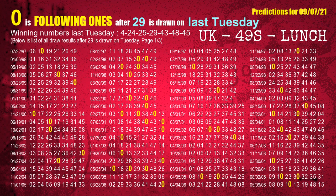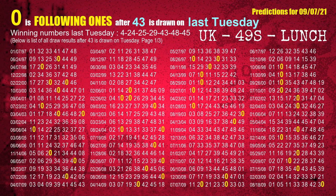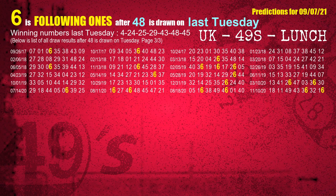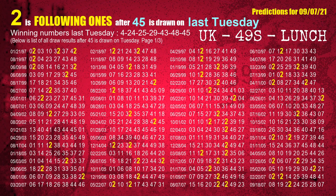The fourth winning number last Tuesday is 29. The most frequently following units digit is 0 when 29 is the winning number on last Tuesday. The fifth winning number last Tuesday is 43. The most frequently following units digit is 0 when 43 is the winning number. The sixth winning number last Tuesday is 48. The most frequently following units digit is 6 when 48 is the winning number. The booster winning number last Tuesday is 45. The most frequently following units digit is 2 when 45 is the winning number on last Tuesday.